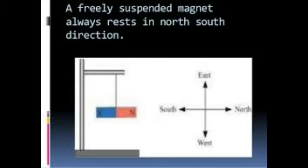In this picture you can see the directional property of a given bar magnet. It is always pointing to the north because magnets behave according to the Earth's magnetic field, and they are oriented to show the north-south direction when freely hung or placed freely.